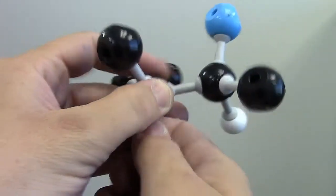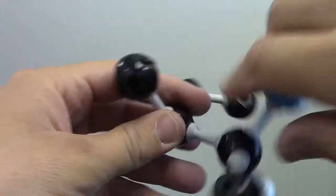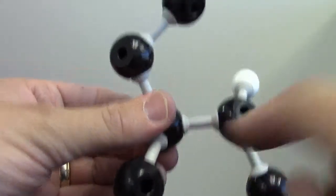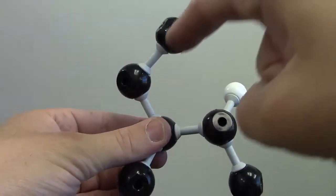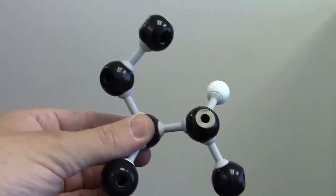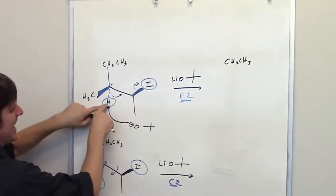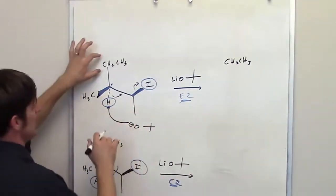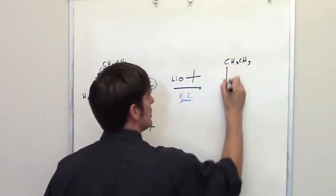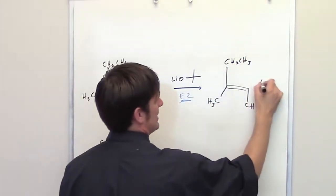The base comes in, grabs this hydrogen, takes its electrons and pushes them down to form a double bond, kicking off the iodine in one fell swoop. With a double bond now in place, the ethyl group and the methyl group are on opposite sides of each other — so this is an E-alkene. In this first example, rotating around the bond to place the hydrogen and iodine anti-coplanar ends up placing the ethyl group and methyl group trans to each other relative to the double bond, resulting in an E-alkene.